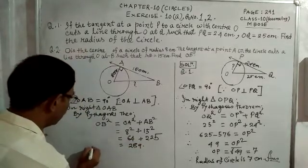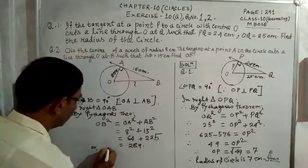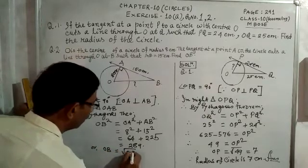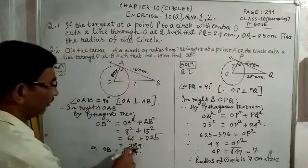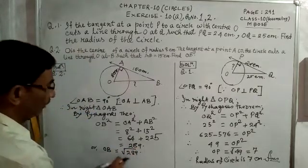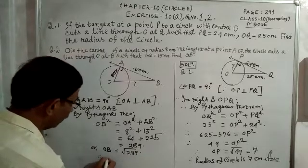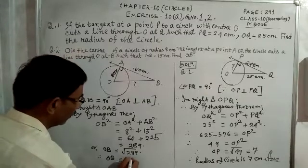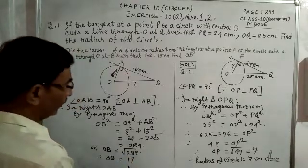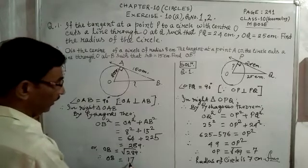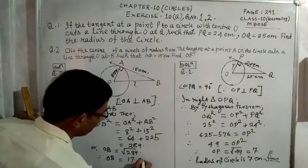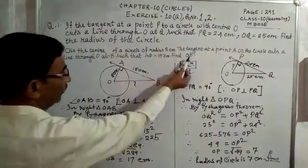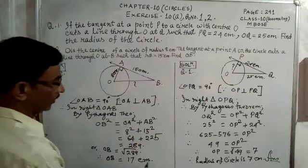So OB² equals 289. Therefore OB equals the square root of 289, which is 17. The question is given in centimeters, so OB equals 17 centimeters. That is the answer.